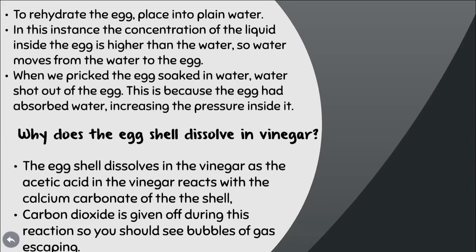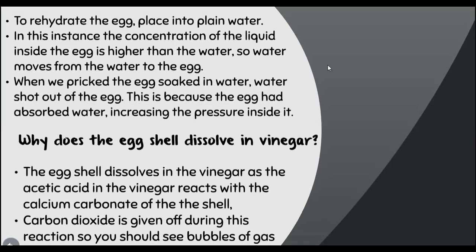To rehydrate the shrunken egg, place it into plain water. The concentration inside the egg is now higher than that of the water, so water moves from the water into the egg. When we pricked the egg soaked in water, water shot out because the egg had absorbed water, increasing the pressure inside it. The eggshell dissolves in vinegar because the acetic acid in the vinegar reacts with the calcium carbonate of the shell, and carbon dioxide is given off — so you should see bubbles of gas.